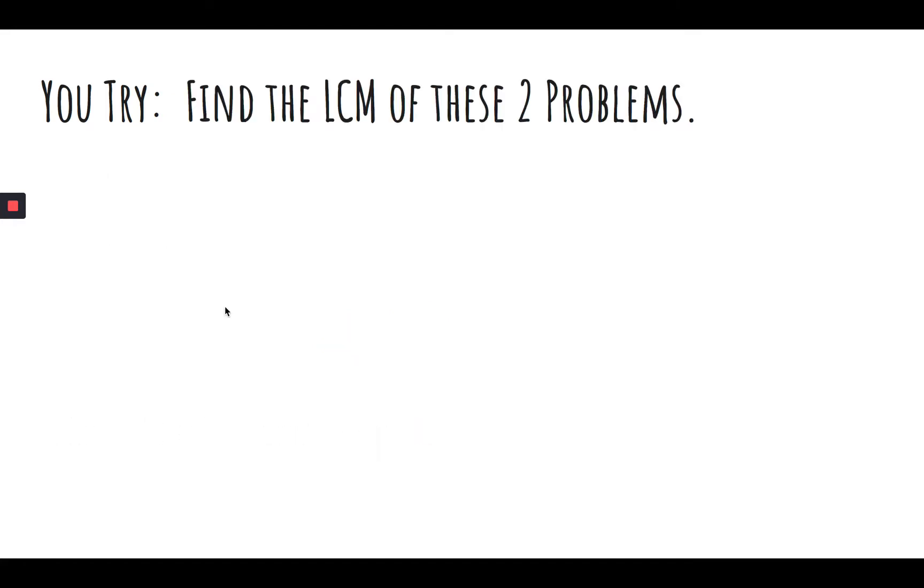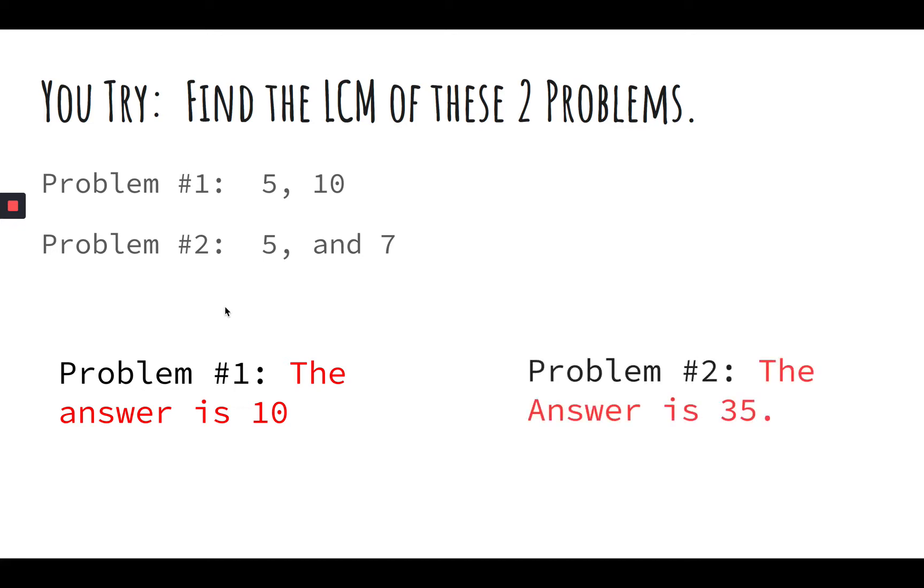If you try two problems on your own, find the LCM of these two problems. Five and ten, and five and seven. Again, I'm going to pause for about 15 more seconds. Great. For number one, if you count by fives and you count by tens, where will they meet up? Ten. If you said twenty, don't forget that ten is also a multiple of itself. So five and ten will meet up at ten. And five and seven, hopefully you put down thirty-five.